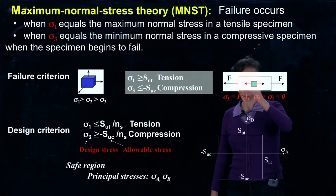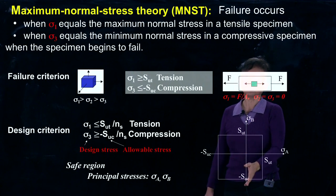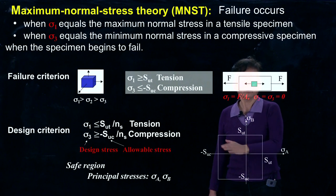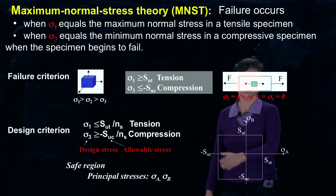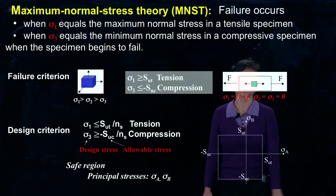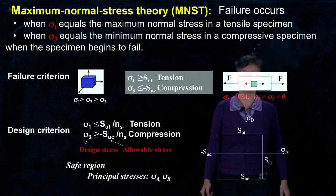We can consider σA as the x direction or σ1, and σB in the y direction. It could also be σ1 or σ3. That's why our safe regime becomes an area. This is the first criteria: maximum normal stress theory.